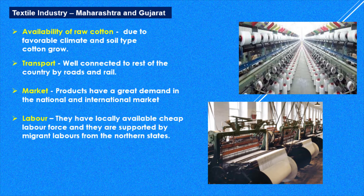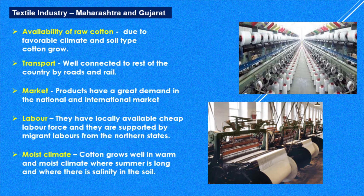Labor is another factor — in our country we easily get cheap labor, supported by migrant labor from North India, especially Uttar Pradesh, Bihar, and Odisha. Then there is moist climate. The southern part of India, below the Tropic of Cancer, has tropical climate, and since it is close to the sea there is moisture. Cotton grows well in warm and moist climate where summer is long and where there is salinity in the soil.